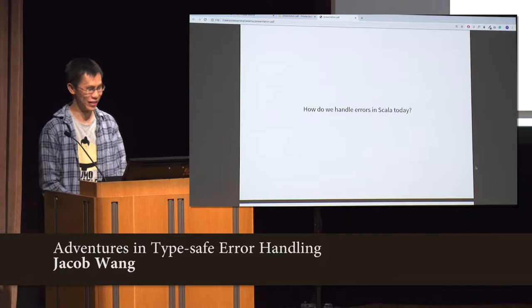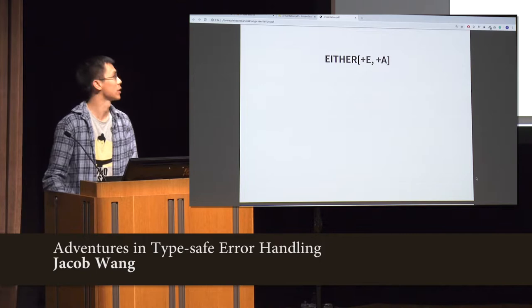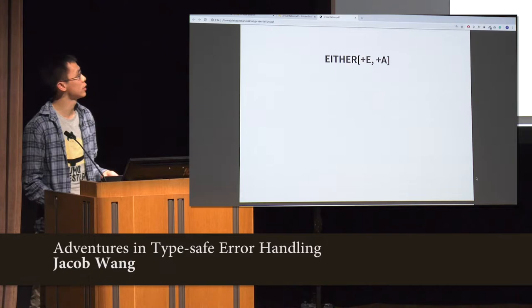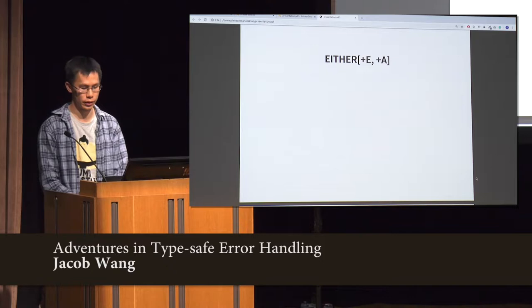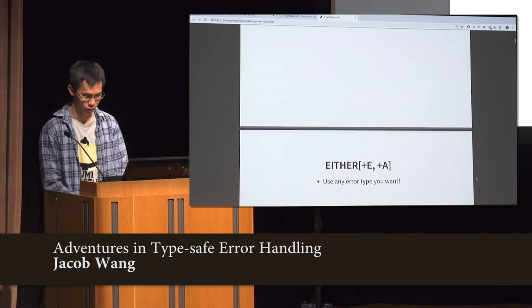How do we handle errors in Scala today? So if you're just starting out in Scala, you will very soon encounter the type Either, which has two type parameters, one on the left side and one on the right side. Traditionally when we're doing error handling — when we have some process that requires validation or something like that — we use the left side as the error type to represent errors.